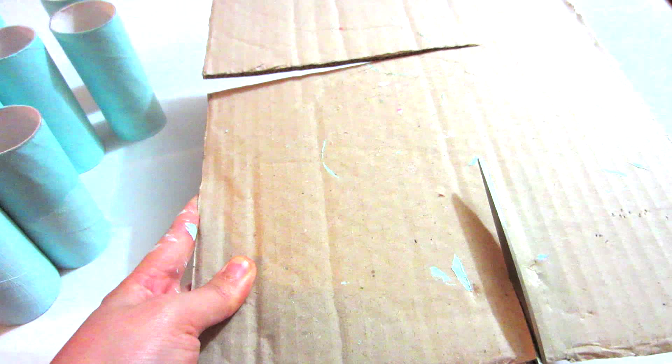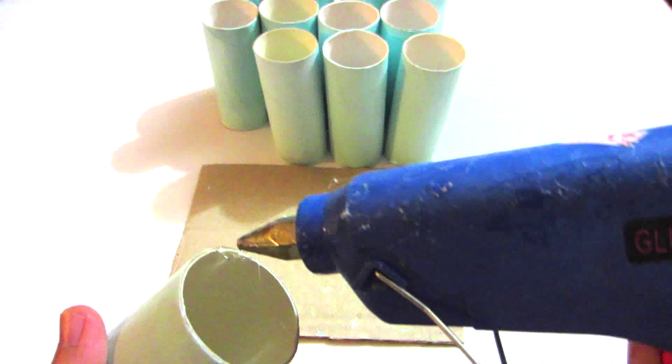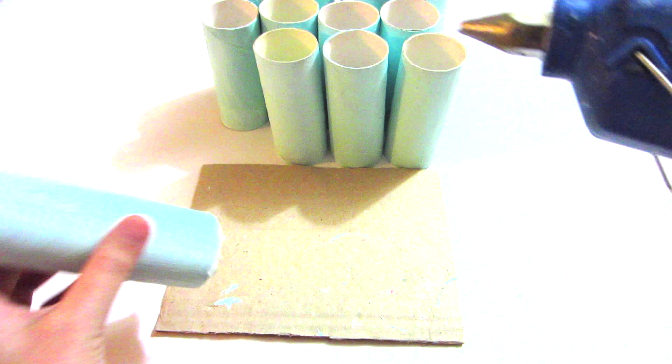While you're waiting for the paint to dry, cut out a piece of cardboard, then glue the rolls down on the cardboard using a hot glue gun.